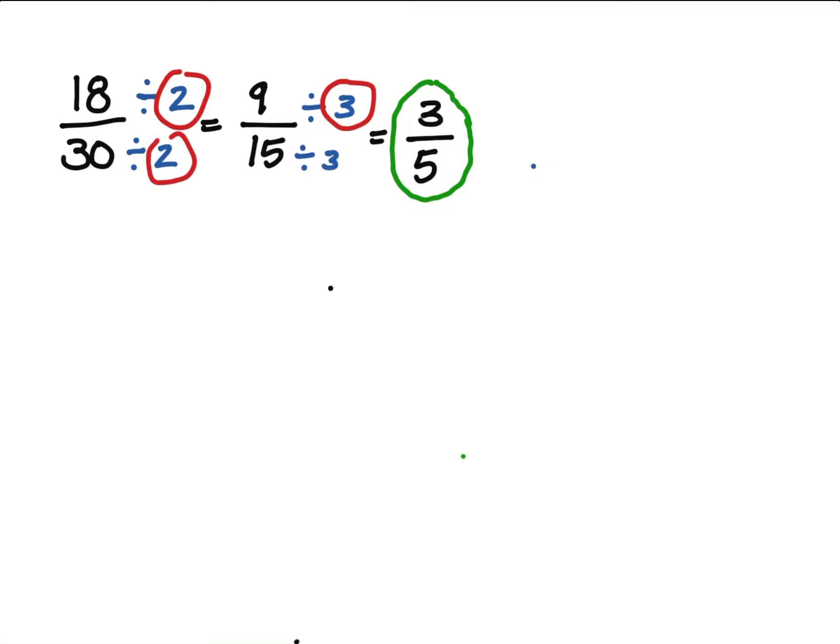2 went into 30 and then 3 went into 15—that's 6 as well. So if we look at the problem again and we go 18 over 30 and we look at 6 and 6...